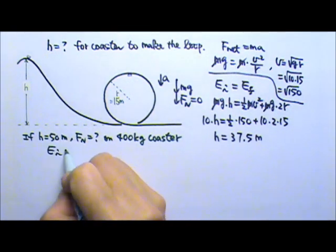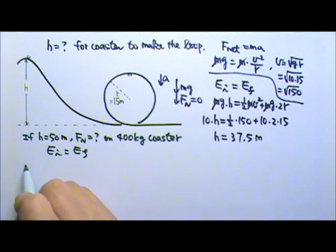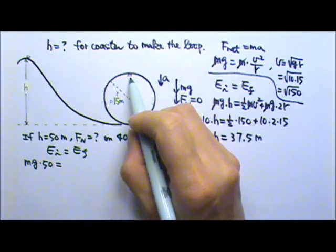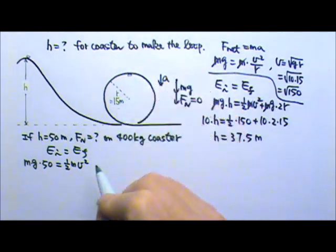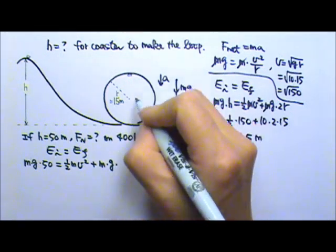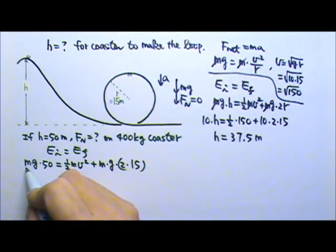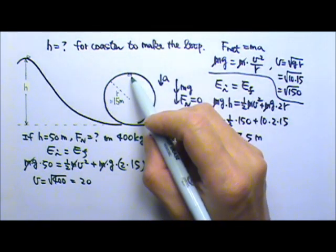So if I use conservation of energy, again initially the coaster starts at rest. No ½mv², only mgy. And this time we know the height is 50. There's no spring involved so we don't have to worry about the spring. And then right there the coaster would be moving with a certain speed. We don't know the speed. And it's also up high so it has mgy and the height would be again 2r. So the mass again cancels. And if we plug in g equals 10 then we can have the speed is square root of 400 which is 20. So the speed of the coaster must be 20 meters per second over there.